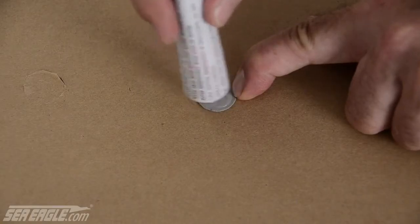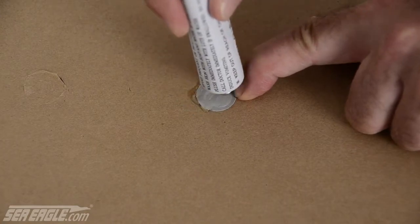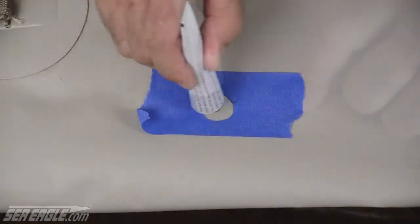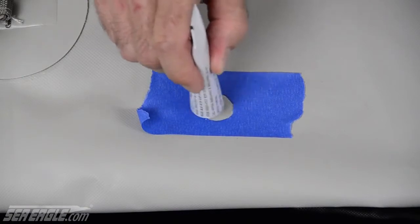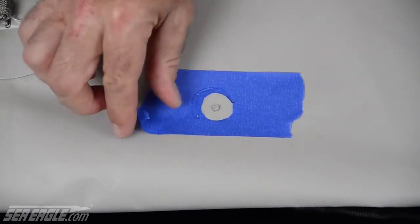Place a uniform layer of glue on the patch and to the boat in the area of the leak. Then remove the tape.